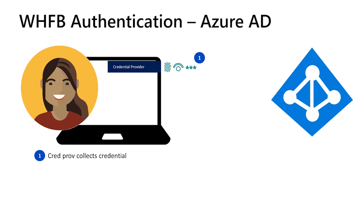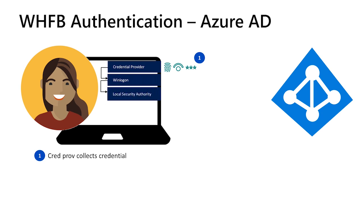If the gesture is correct, the credential provider will get back a ticket from the Windows Hello service that can be redeemed for a signature operation. This ticket is passed to WinLogon, which essentially loads the credential providers and is also responsible for loading the user profile after a successful logon. WinLogon will then pass the credentials to the Local Security Authority, or LSA for short, which will complete the authentication process.